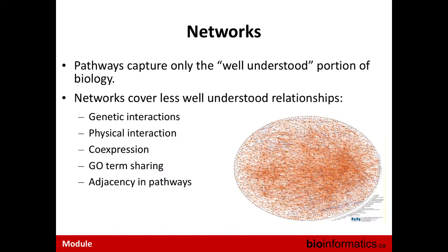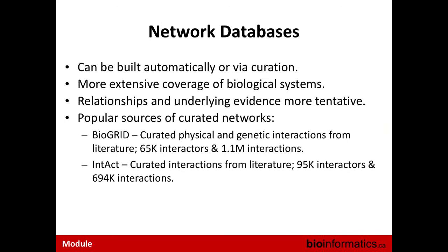Now, networks. Pathways capture only the well-understood portion of biology. Networks can cover less well-understood relationships, including genetic interactions from suppressor/enhancer screens, physical interactions, CRISPR studies, GO-term sharing, and co-expression networks. Network databases are more typically built automatically from high-throughput experiments such as CRISPR screens. They have extensive coverage of biological systems, but the relationships and underlying evidence are more tentative — typically there will be false positives and false negatives, and you have to understand the limitations of the networks you work with.